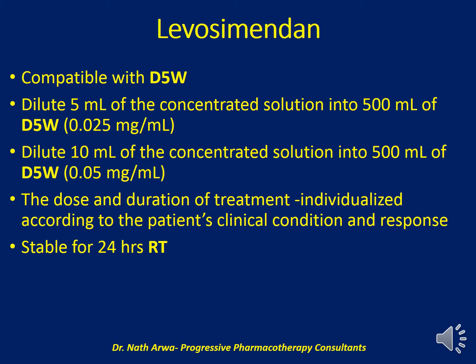Levosimendan is compatible with 5% dextrose. We should dilute 5 ml of the concentrated solution using 500 ml of 5% dextrose to obtain a 0.025 mg per ml solution. The dose and duration of treatment is individualized according to the patient's clinical condition and response to therapy, so the physician or team managing the patient decides the rate of administration. Such solutions are stable for 24 hours at room temperature.